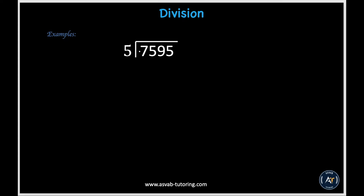We know we can't get 7 exactly when multiplying 5 by a number, but we can get close. So 1 times 5 gets us closest to 7, because 2 times 5 gives us 10, which is too far. When we subtract, we get 2. Now 2 is way less than 5, so there's no number we can multiply 5 by to get close to 2. So we must use the next digit of the dividend, which is 5, and bring it down next to the 2 to get 25. We know 25 is divisible by 5 because 5 times 5 is 25. We put down 5 and subtract to get 0.